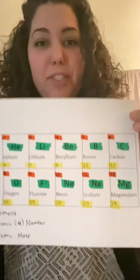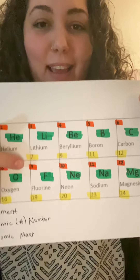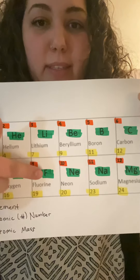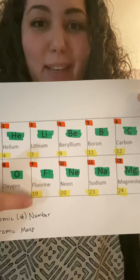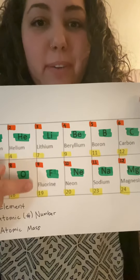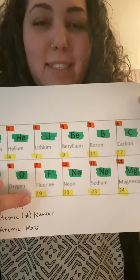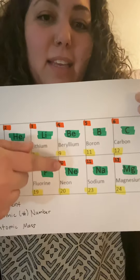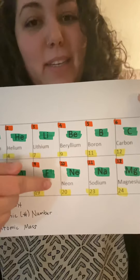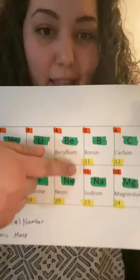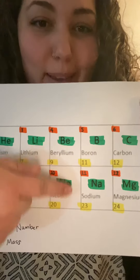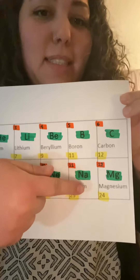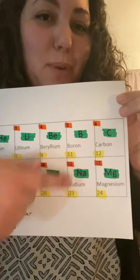The thing to remember with these is they have to say the number, the element, the symbol, and the mass. So it's 9 fluorine F-19, 10 neon NE-20, 11 sodium NA-23, 12 magnesium MG-24.